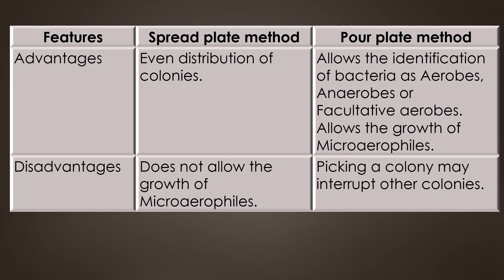Regarding advantages: the spread plate method shows even distribution of colonies. The pour plate method allows the identification of bacteria as aerobes, anaerobes, or facultative anaerobes, and it also allows the growth of micro-aerofiles — organisms which require a very low amount of oxygen for their growth.